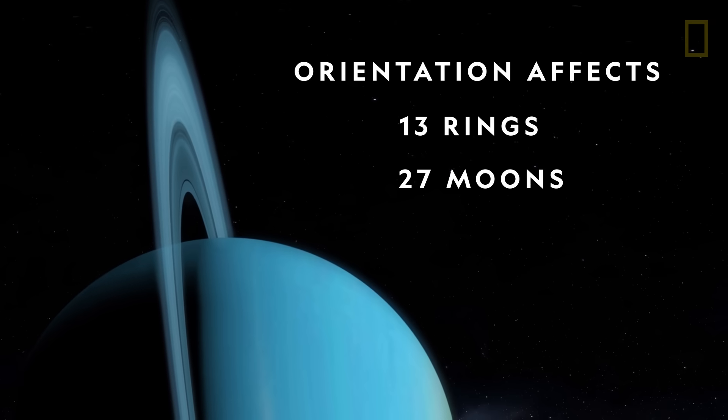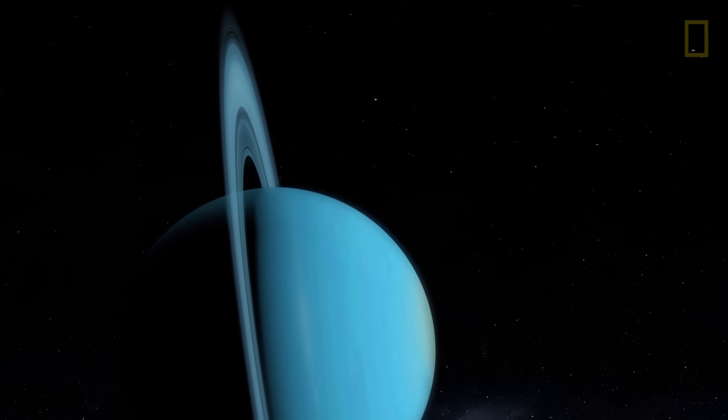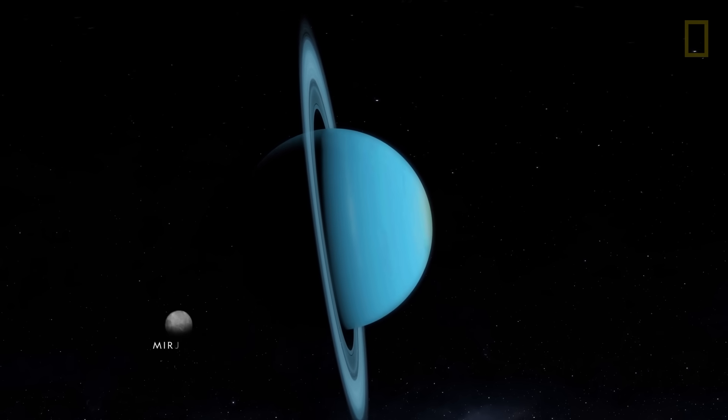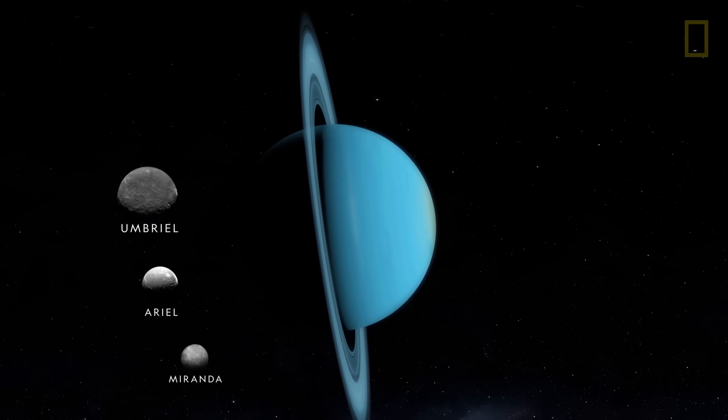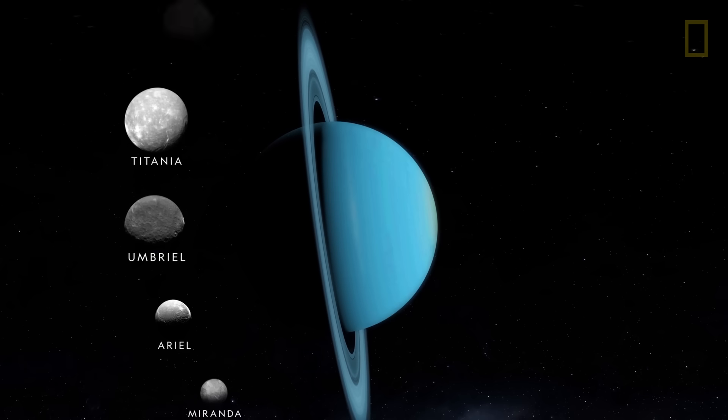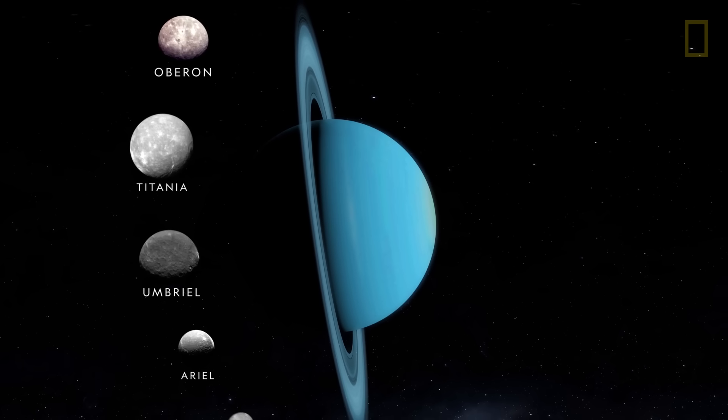Unlike the rings and moons of other worlds, which orbit their home planets horizontally, those of Uranus orbit in a vertical orientation along the planet's tilted equator, much like a ferris wheel.